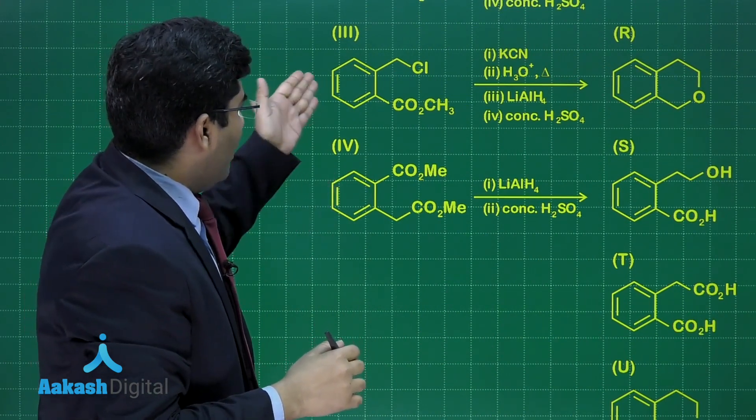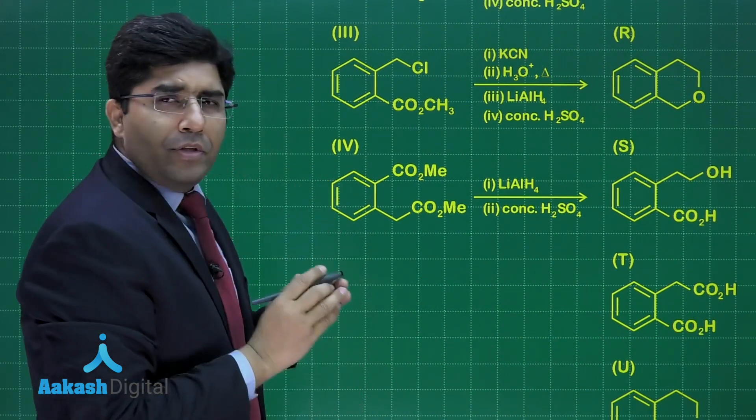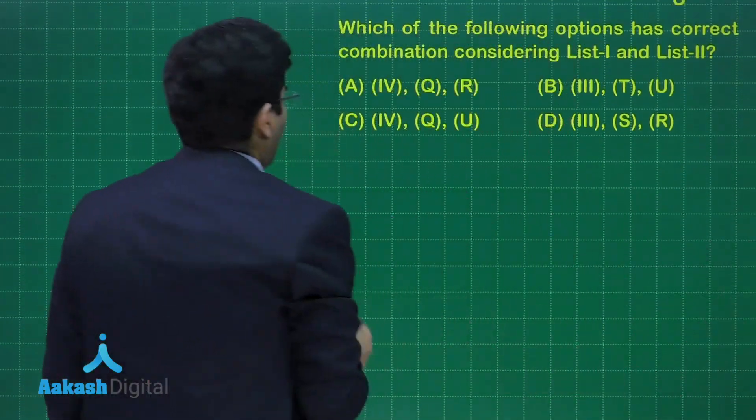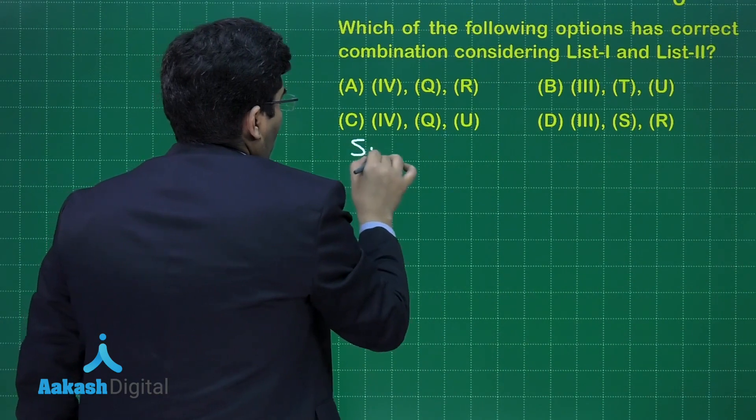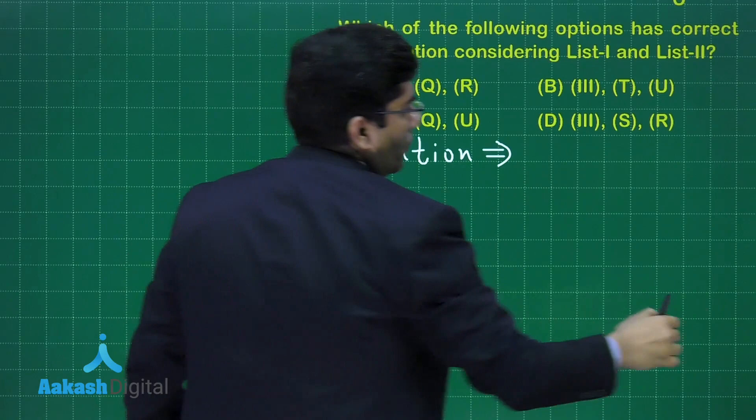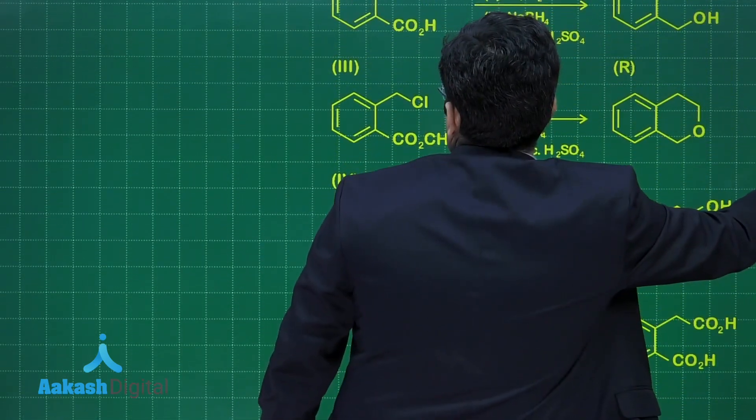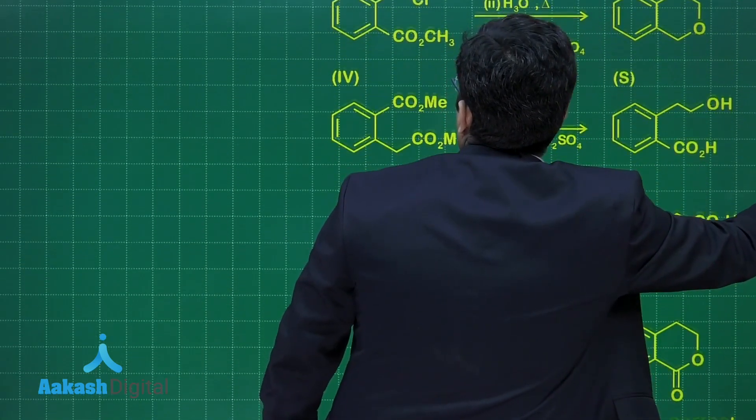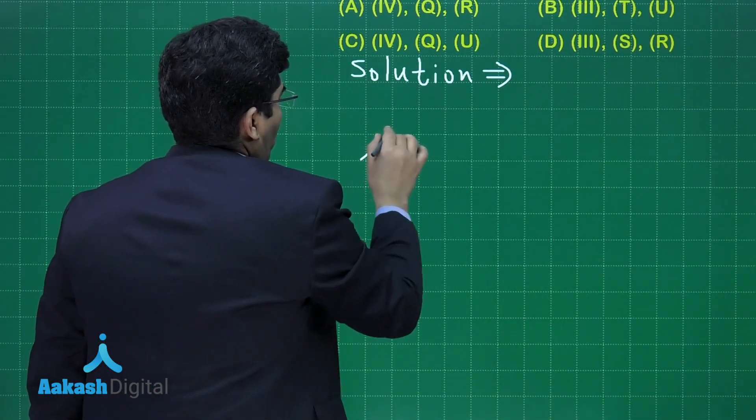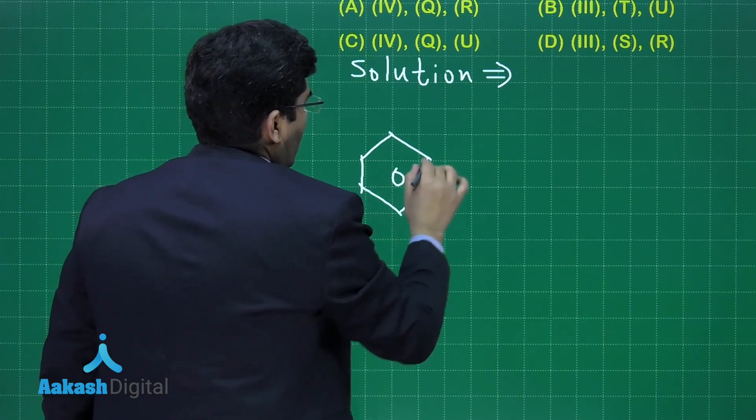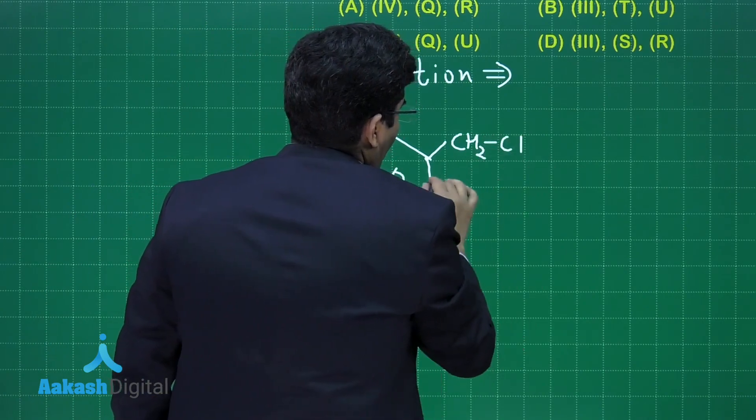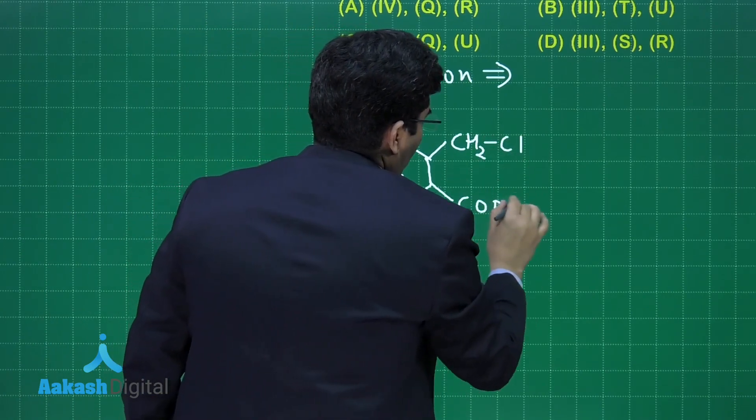So we have to solve for the third one and the fourth one. Let us start with the third one. The solution: our compound which is given is a benzene ring with CH2Cl and ester group COOCH3.